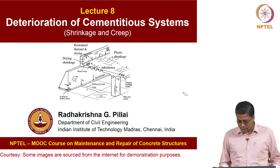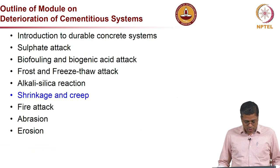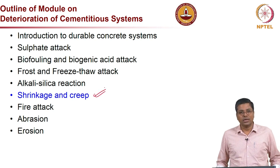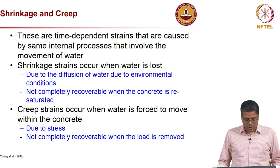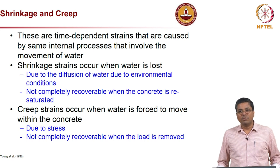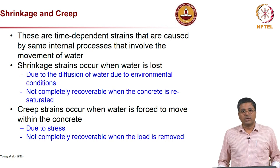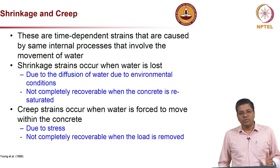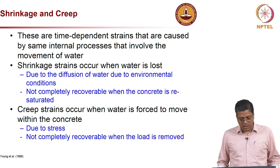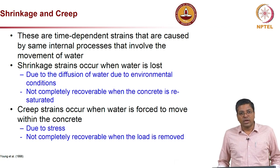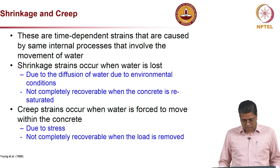This is the second lecture in this module on deterioration of cementitious systems. We will focus on shrinkage and creep. These are basically time-dependent strains caused by similar internal processes which involve movement of water within the concrete. In the case of shrinkage, this movement of water is happening due to environmental conditions, which induces strain or volumetric change. In the case of creep, it is mainly because of the load applied or the stress generated in the concrete.